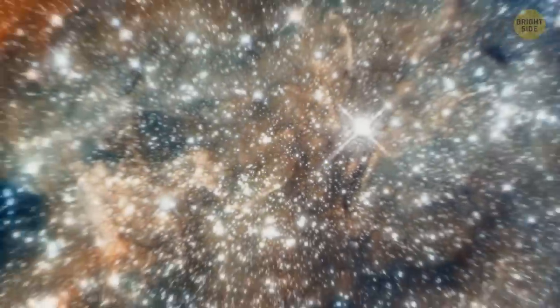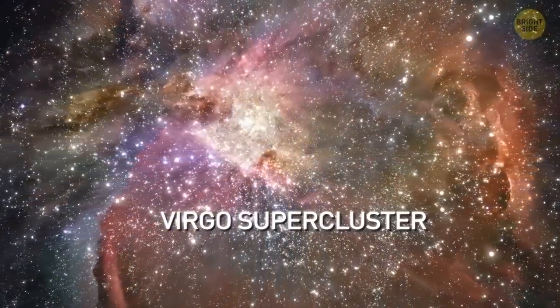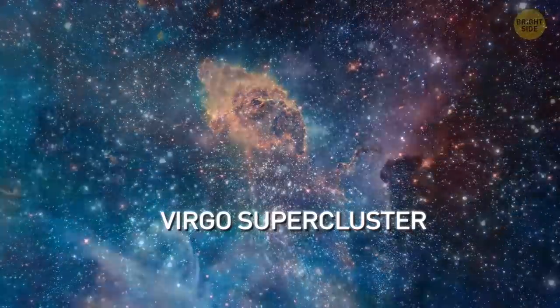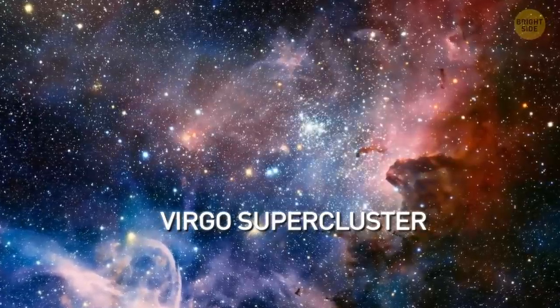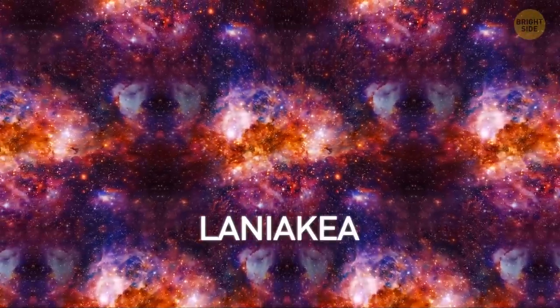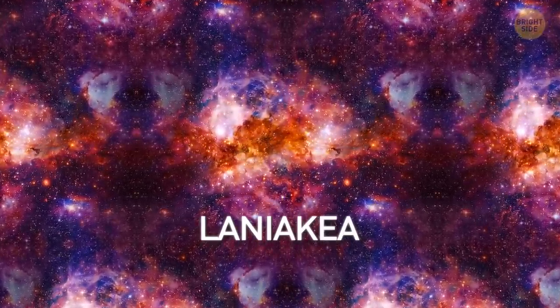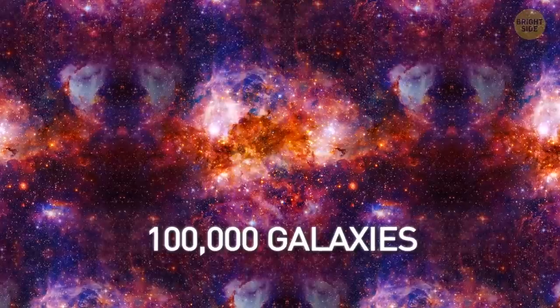Zoom out, please. This one is the Virgo supercluster. It's 20 times larger than the local group. There are about 30,000 different galaxies. And the mass of the whole thing is about 1 in 15 zeros solar masses. Zoom out again. Laniakea. This structure is almost three times larger. It includes the Virgo supercluster and other smaller clusters. And there are about 100,000 galaxies here.